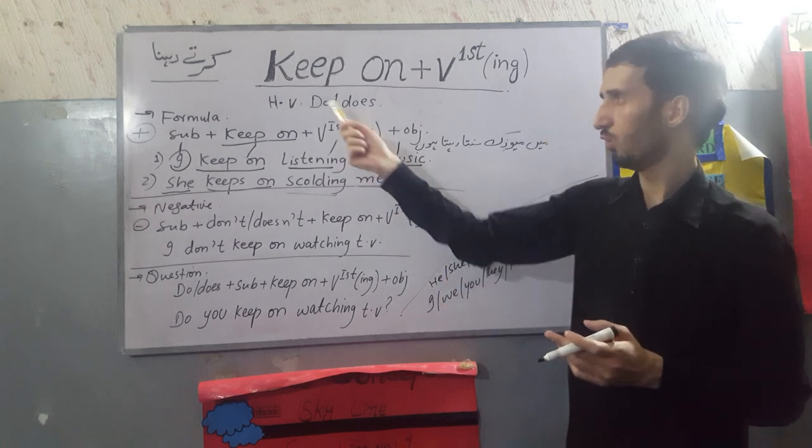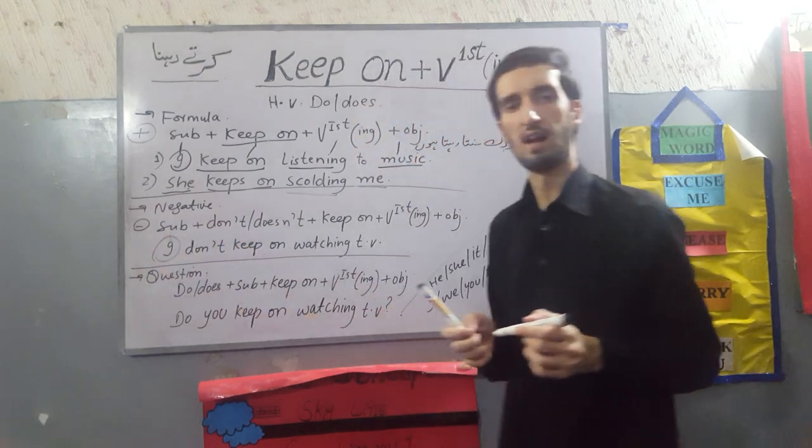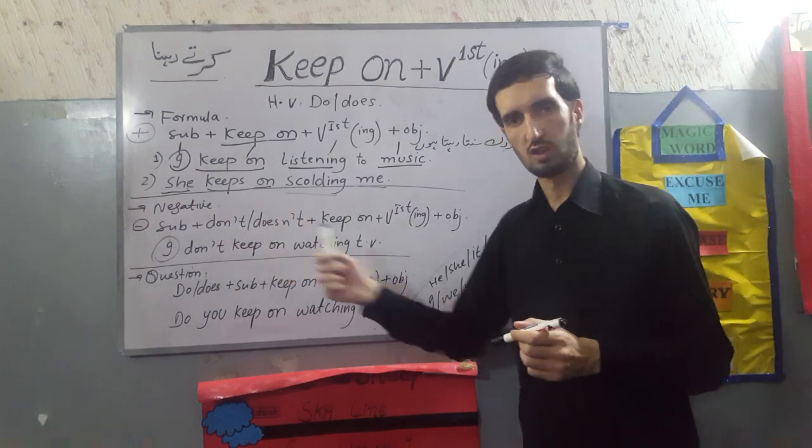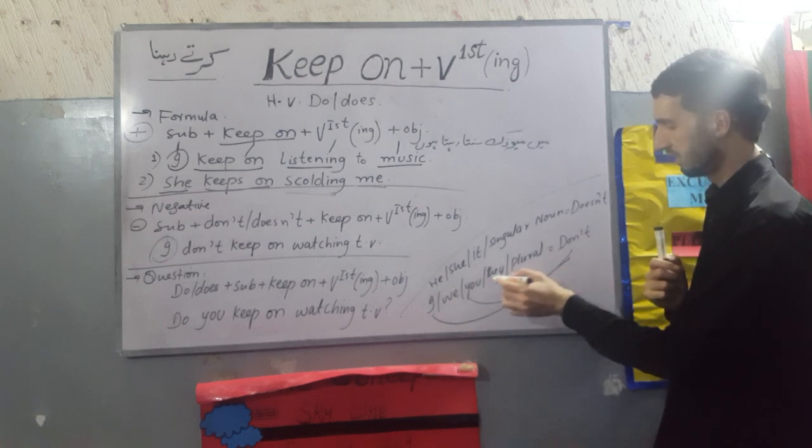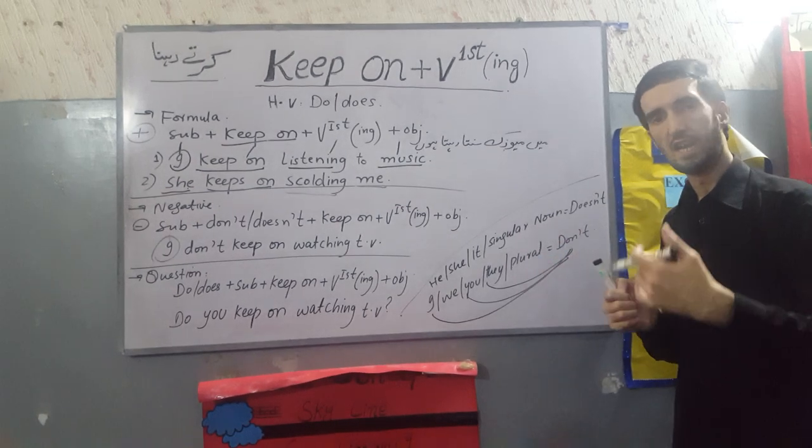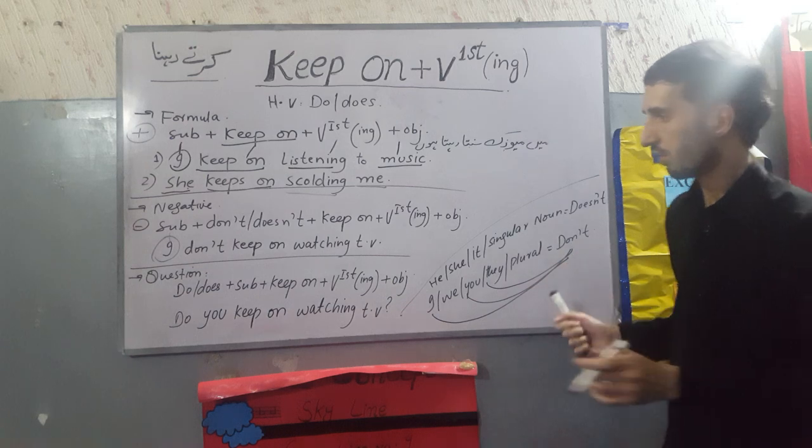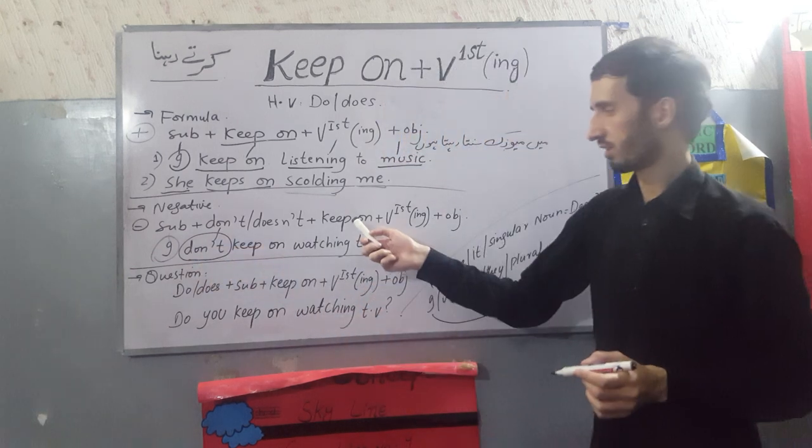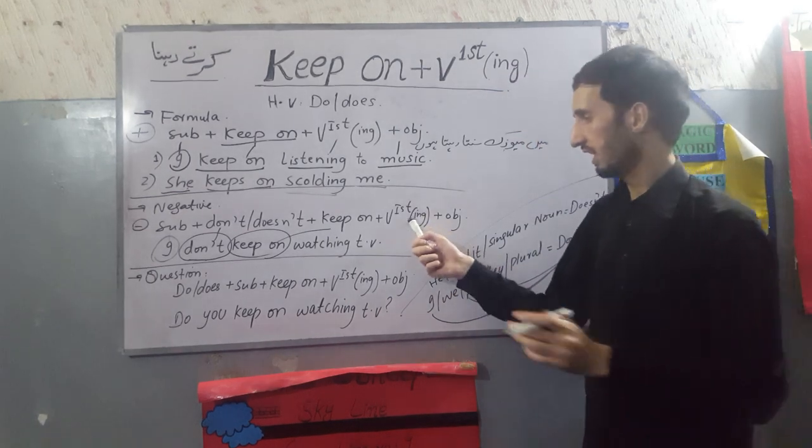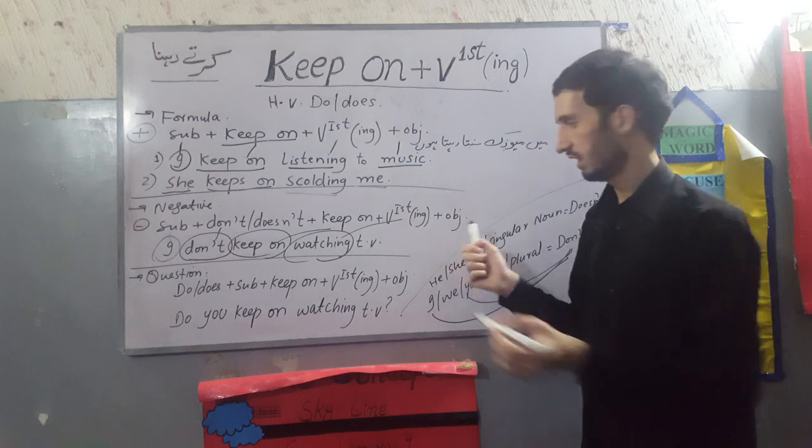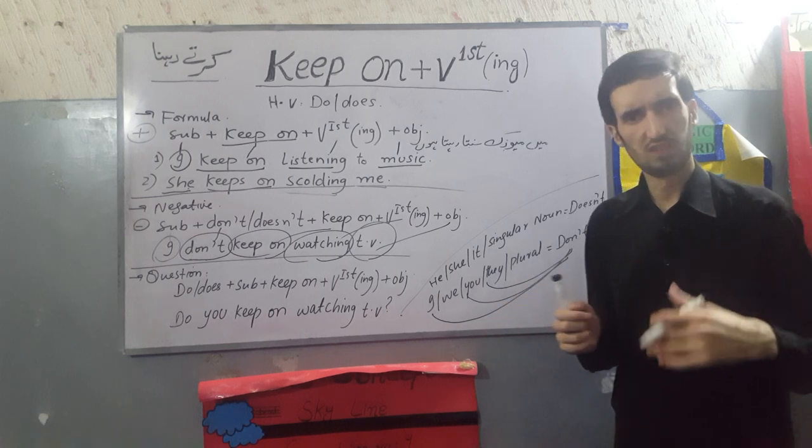After that we have our negative. The helping verbs are do not and does not. First of all we have to use the subject. If I, you, they, or any plural noun, then what will happen? Do not. So we have put do not. After that we have our structure keep on, so we have put keep on. After that ing form is watching, and our object is TV. I don't keep on watching TV.